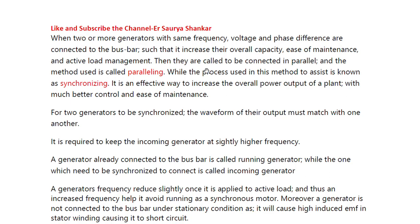When frequency, voltage, and phase difference are matched and two generators are connected to the bus bar, they are called to be connected in parallel, and the method is called paralleling. The process used to assist in this method is known as synchronizing — we are syncing two generators. It is an effective way to increase the overall power output of the plant with much better control and ease of maintenance.